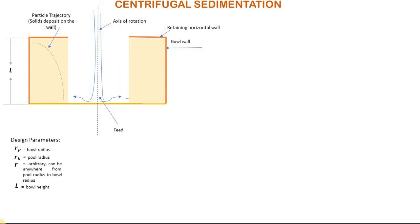The distance from the center to the liquid wall buildup is called the pool radius, RP. The radius of the bowl is called RB. The length of the liquid buildup expanding from RP to the bowl wall is termed as arbitrary.